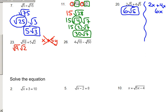18 becomes root 9 root 2 plus 5 root 2. This gives me 3 root 2 plus 5 root 2, which is 8 square root of 2. There's your final answer.